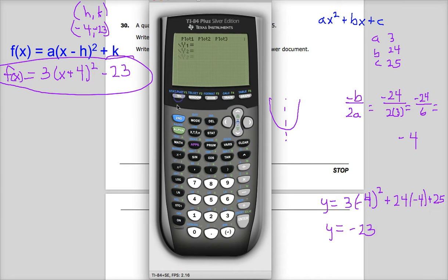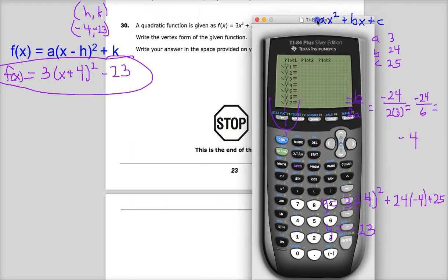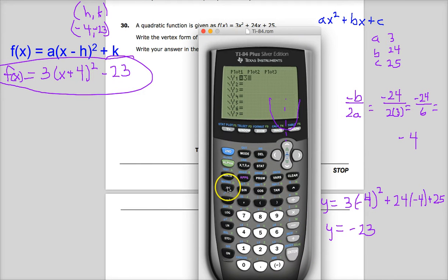So, now I'm ready to go in and type in my equation. 3x squared plus 24x plus 25. I can just graph it. There it is. I can find my vertex very quickly this way.